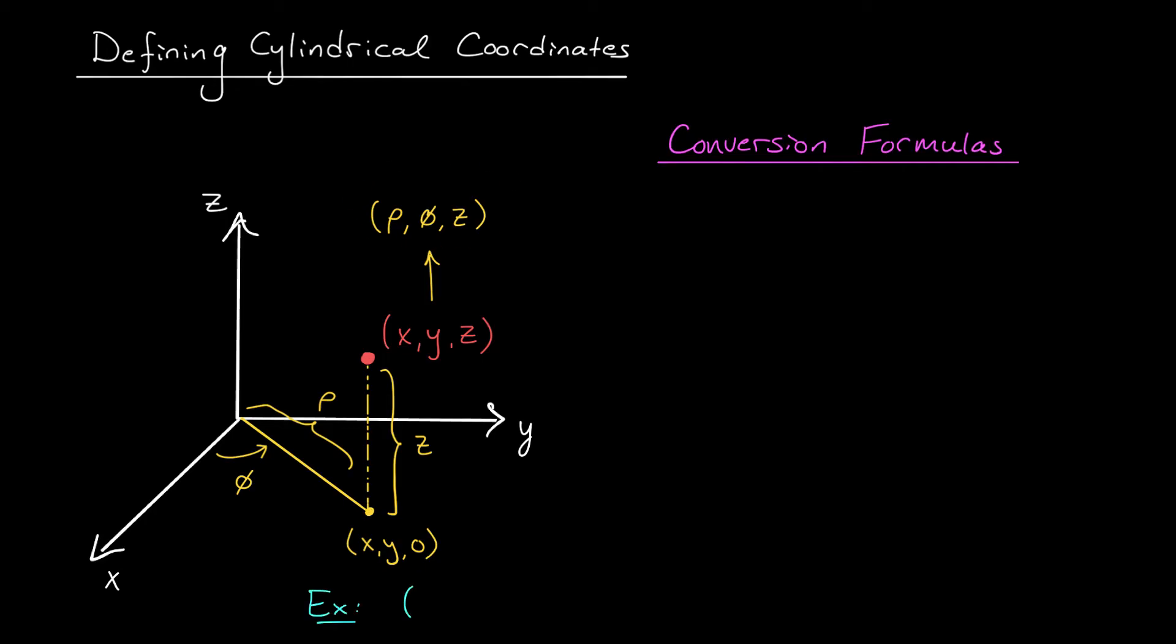As a super quick example, if you wanted to convert the point (x, y, z) = (1, 1, 1) from Cartesian to cylindrical coordinates, well, you could start with the z value. The z value doesn't change system to system, so z is 1. For rho and phi, you'd need to find the polar coordinates of the point (1, 1). I'll let you show that rho is root 2 and phi is pi over 4.